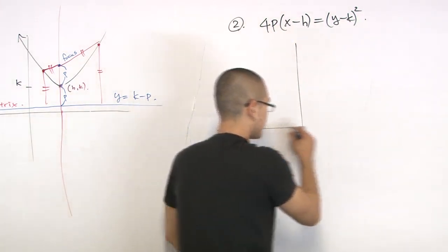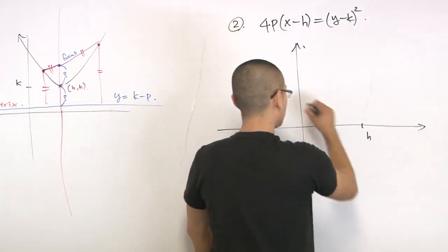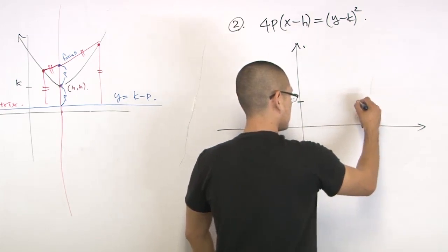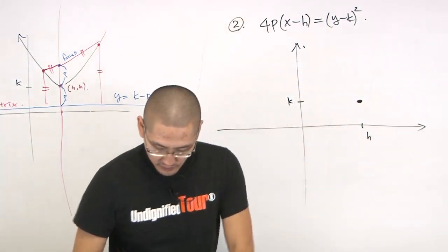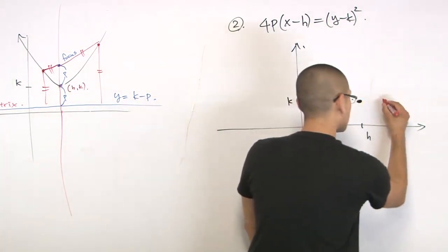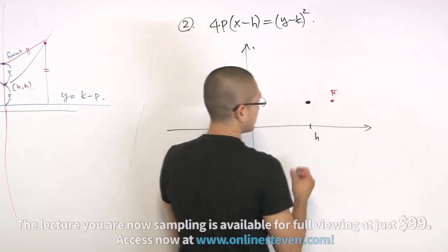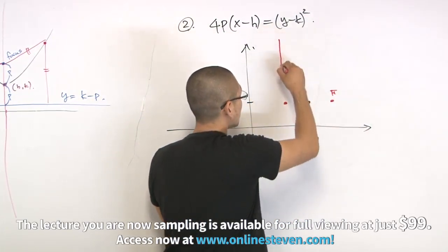We have a coordinate, let me do a better job of drawing this thing. Let's say h and k is somewhere here. We're going to set up the directrix and the focus, same distance away from each other.